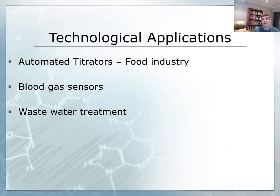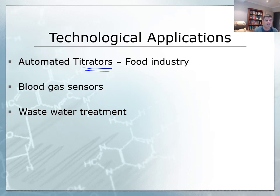The final area to look at is technological applications. One thing we are aware of as we carry out titrations is the labour-intensive manner of titration — it is a very precise technique and it's very hard to hit exactly the equivalence point or end point. As a result, there are a number of technological devices now that can be used to automate the titration process. Some of these are found used in the food industry.